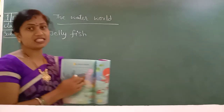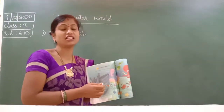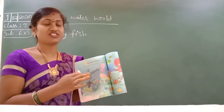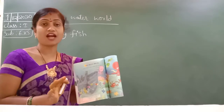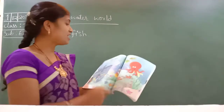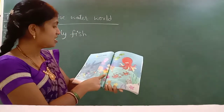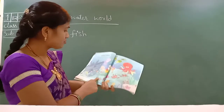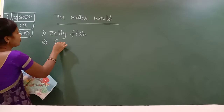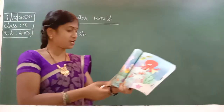You have to learn the spelling of fish. Whether capital letters or small letters, you have to learn the spellings of all these animals. Here jellyfish is the first. Next, you can see small fishes also in this water bowl. Second one is just fish — many fishes. You have to learn the spelling of fish.